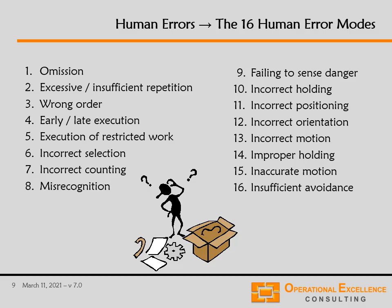Looking at just a few examples: the first one is omission — a person could forget to do something in a certain process step. Excessive or insufficient repetition means a person does something too often or not often enough; for example, instead of drilling two holes, the person only drills one hole or drills three holes. Or a person could do something in the wrong order, leading to the process not delivering desired results, or does something too early or too late and that causes problems. We'll dig deeper into those 16 human error modes in one of the later sections.